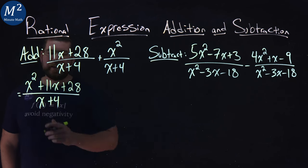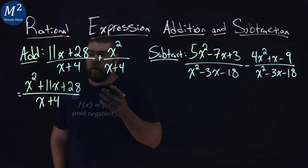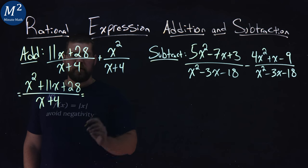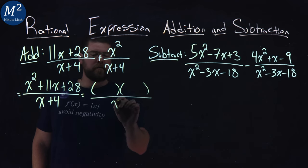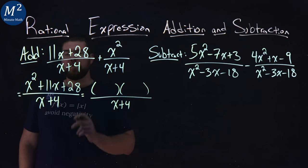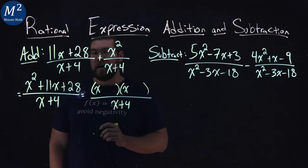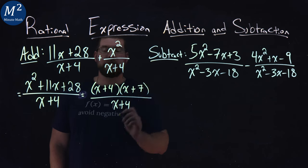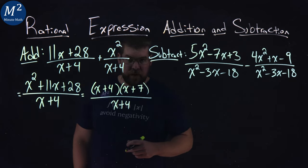Now there's no like terms here that we can combine, but what we want to do is factor, see what we can factor out here. So in the numerator, I want to ask myself the question, just like any other factoring, what two numbers multiply to be 28 but add to be 11, and that is going to be 7 and 4. We have x plus 4 here and x plus 7. 4 times 7 is 28, 4 plus 7 is 11.